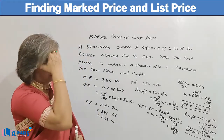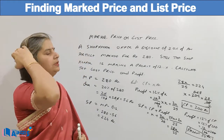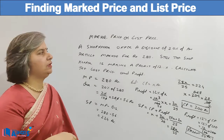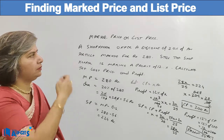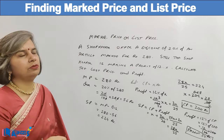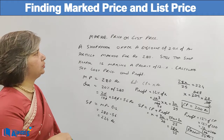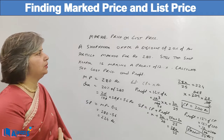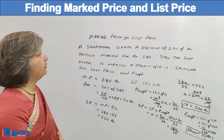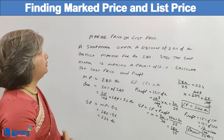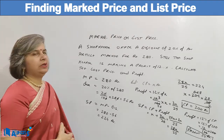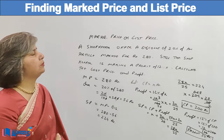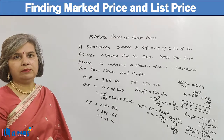This is how we can calculate the cost price and the profit when the mark price has been given and the shopkeeper is offering a discount. Let us summarize the concept: whenever we are calculating a discount, the discount is always calculated on the mark price.